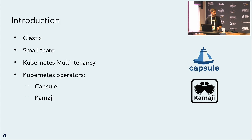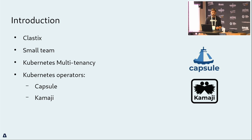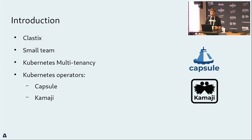They had two different approaches: the soft one with Capsule, and a harder one with Kamaji. You can think of Capsule as a namespace-as-a-service — it provides a namespace as a service for people joining the cluster. With Kamaji, you are essentially providing a control plane as a service, used typically by small cloud providers who want to offer their own control plane as a service.